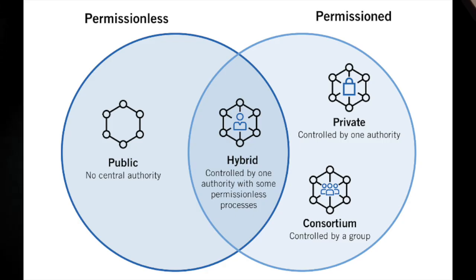Hyperledger Fabric is a blockchain framework that allows interested parties to create distributed ledger projects for internal use. Here you can see a Venn diagram to help you make sense of the similarities and differences between public, private, consortium, and hybrid blockchain.